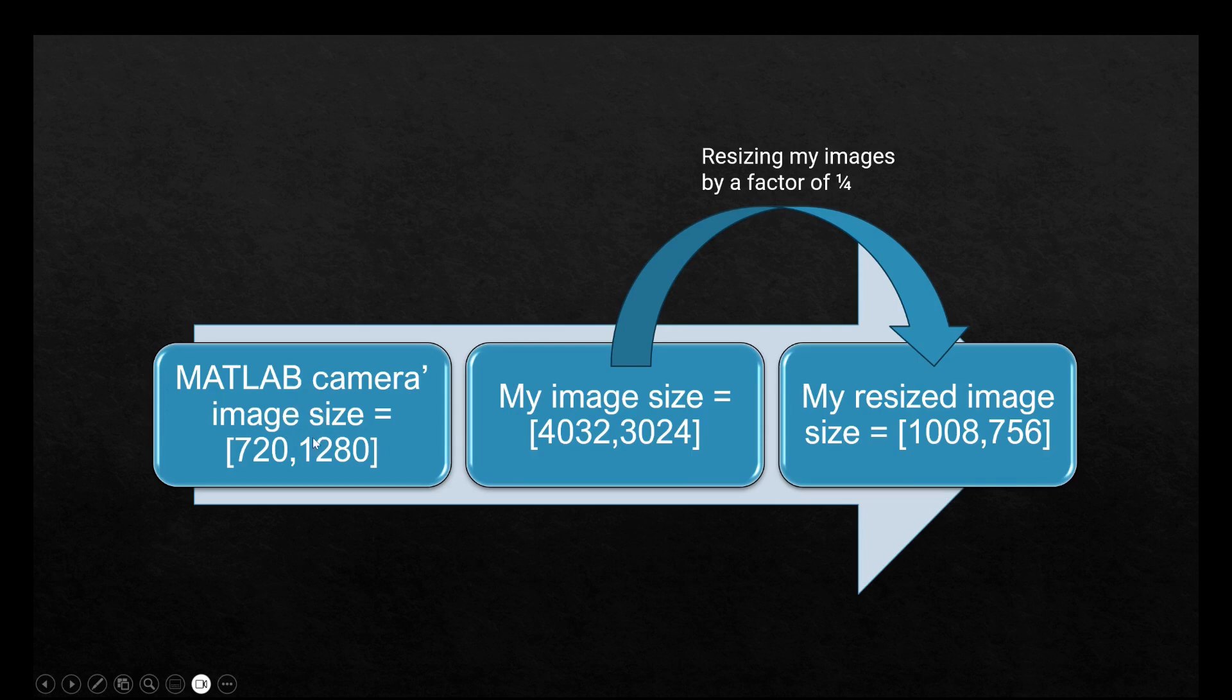The camera that MATLAB uses has the image size of 720 by 1280, but my image has the size of 4032 by 3024. All I have to do is to first resize my image so that it gets as close as possible to 720 by 1280 while the aspect ratio is maintained.